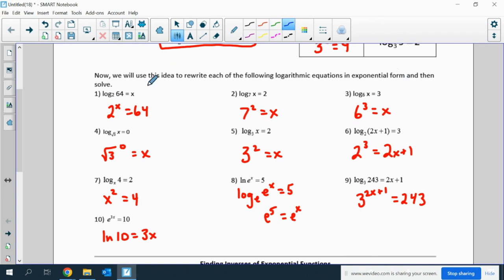Now, I know it says to solve them, and I didn't solve any of them. So a lot of these are just understanding what's happening. If I realize that 2 to the x equals 64, x would equal 6, because 2 times itself 6 times gives us 64. 7 squared is 49. 6 to the 3rd, or 6 cubed, is 216. Anything to the 0 power is 1. 3 squared is 9.